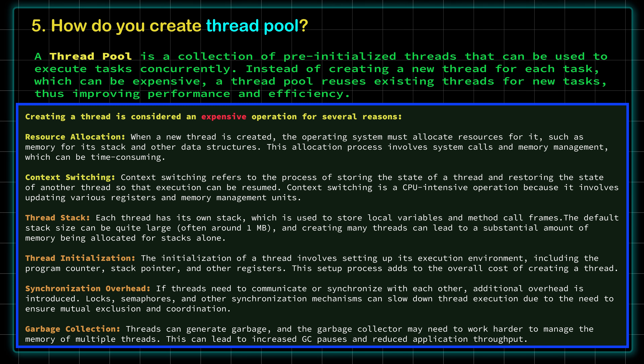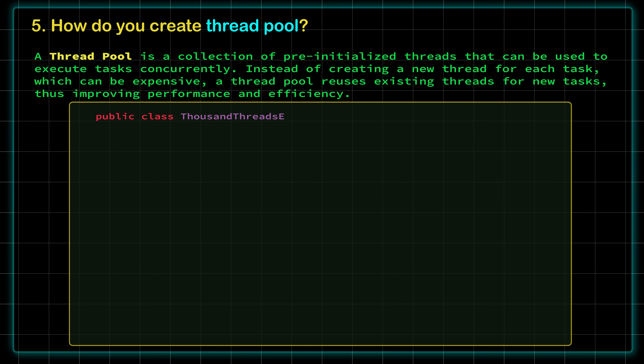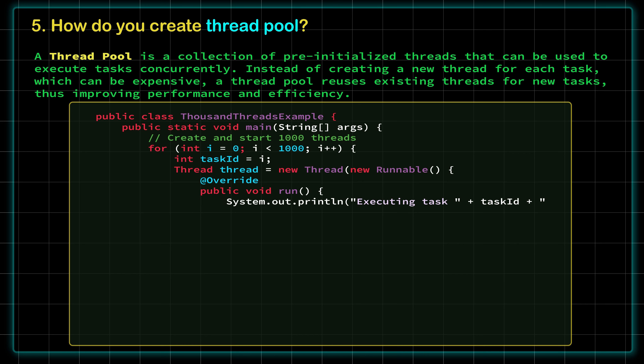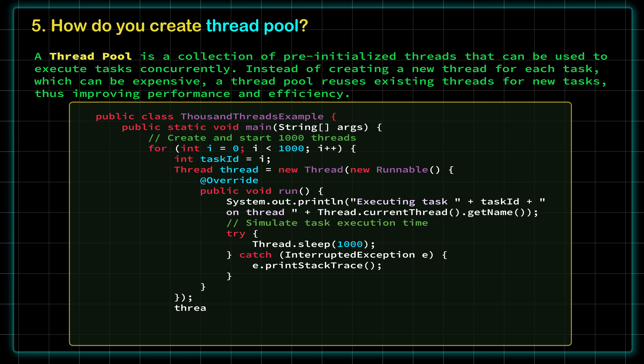For your information, the operations a thread pool must handle when a thread is created include: resource allocation, context switching, thread stack, thread initialization, synchronization overhead, and garbage collection. This is why instead of creating manual threads, we use a thread pool — which the Java framework can handle automatically. Here I am showing an example of creating manual threads: a simple for loop creating a thousand threads and starting them. I'll show you how these manual threads work. Our program starts from the main thread, and in main we have written a for loop to create a thousand threads — these are created as sub-threads from the main thread.